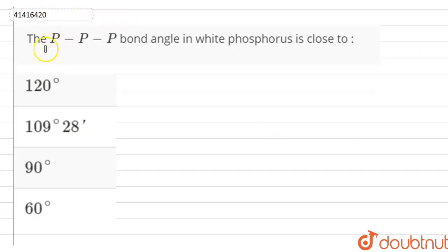Hello everyone, I have asked that the P-P-P bond angle in white phosphorus is close to. Which one is close?